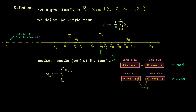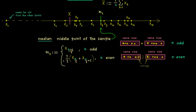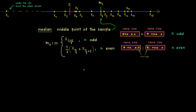We have two cases: either we have a single data point in the middle, or there is none — which would be the case when we have an even number of data points. But this is not a problem at all because we can just take the average of the two boundary points, creating a virtual data point in the middle. So in the mathematical definition we distinguish two cases: if n is odd, we go to the index (n+1)/2, which is exactly the middle point. If n is even, we take the average of x_{n/2} and x_{n/2 + 1}. And there we have it — this is the definition of the median.